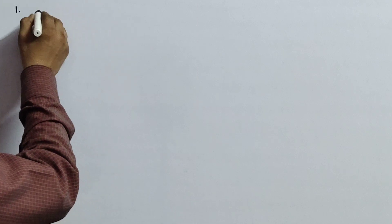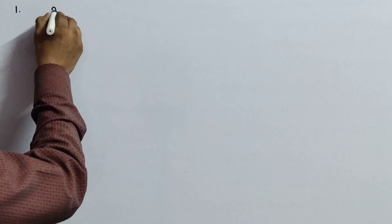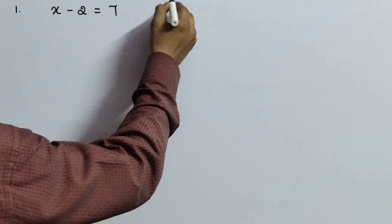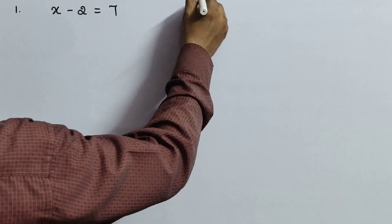This chapter is already discussed in the 7th class but same related model only children. Solve the following equations. The first question is x minus 2 equals to 7, exercise 2.1. We can note in CW. First listen then you note in CW.